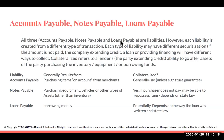Collateralization, or securitization, refers to a lender — the party extending credit — their ability to go after the assets of the borrower to get back their funds, such as in the case of equipment or the like. That ability to collect is really going to depend upon state law. Accounts payable is generally not collateralized, meaning that if the borrower defaults, the person who extended credit may not have an ability to go after those assets.